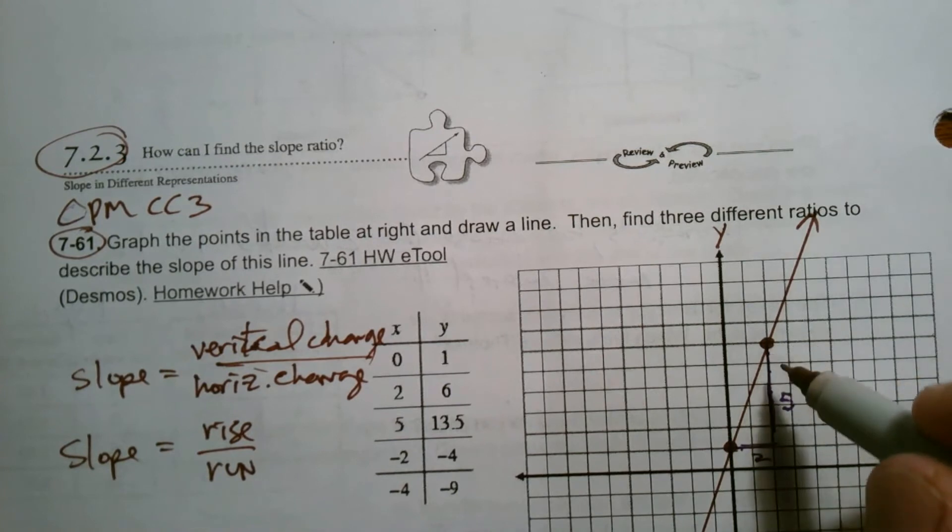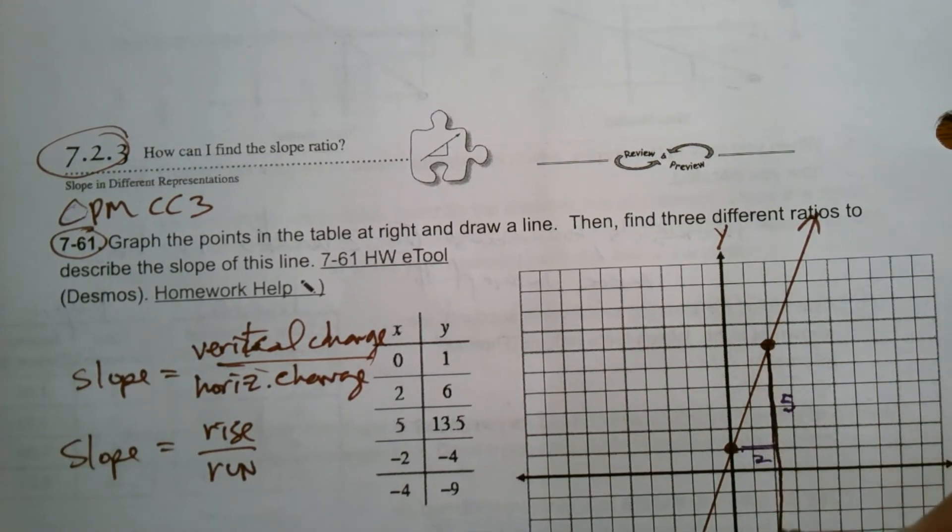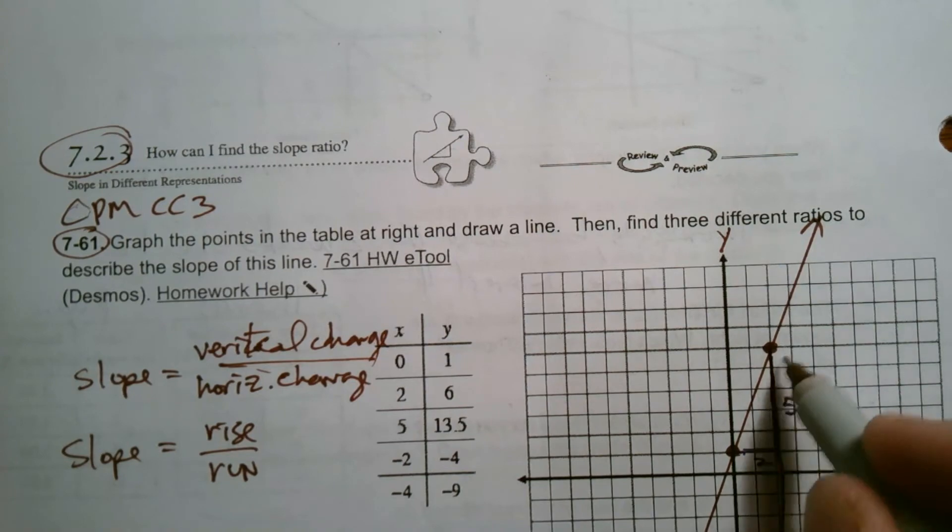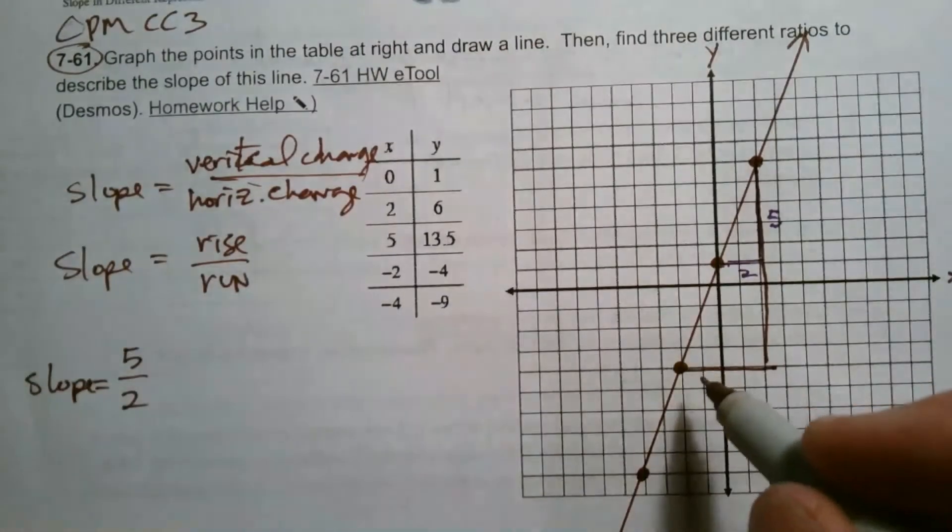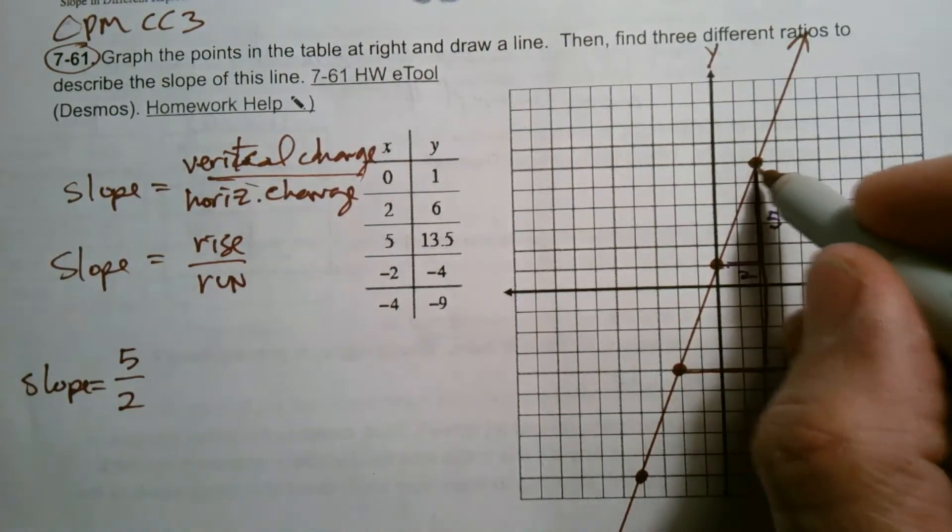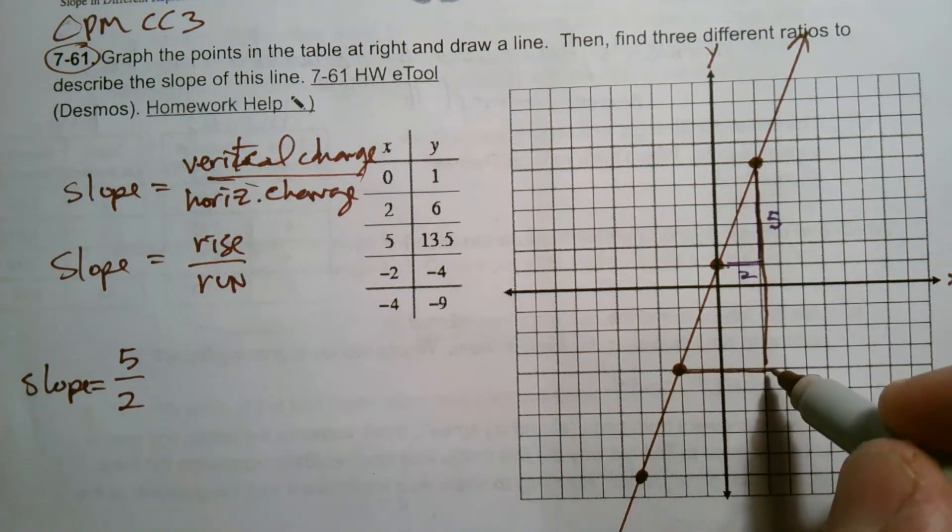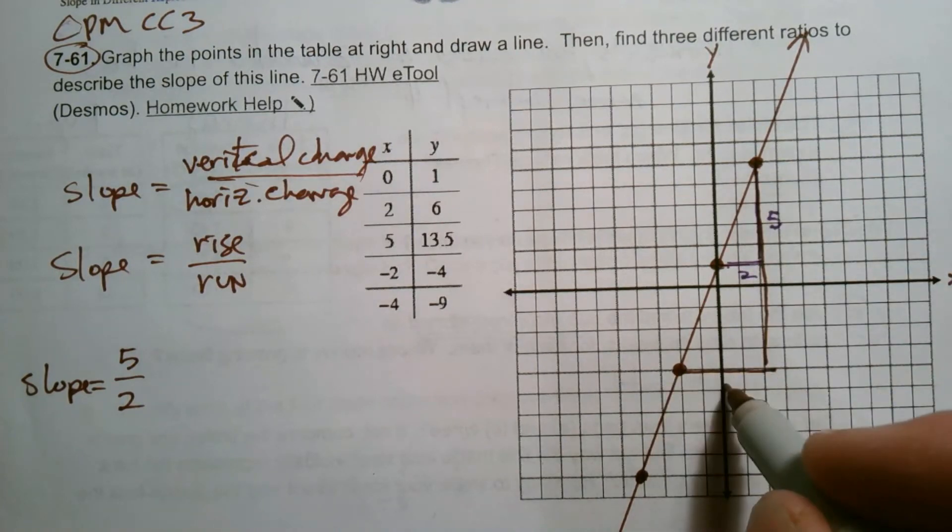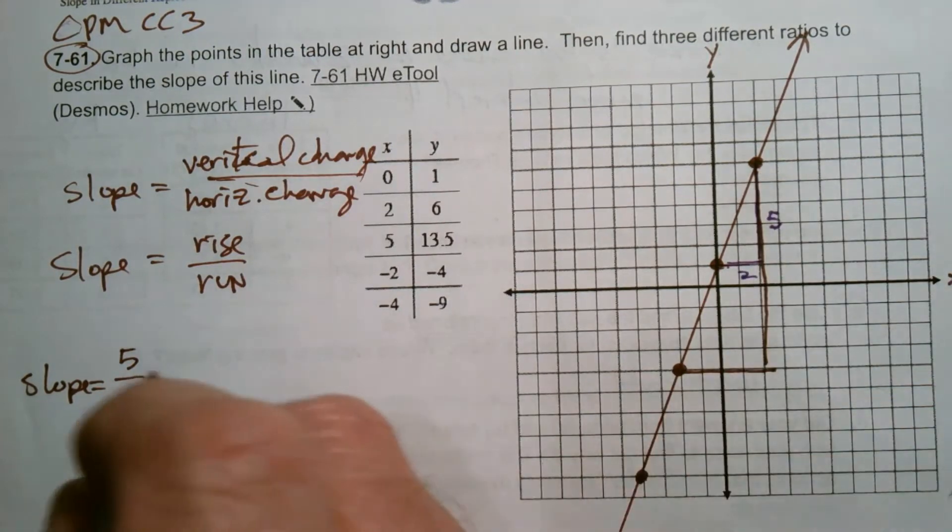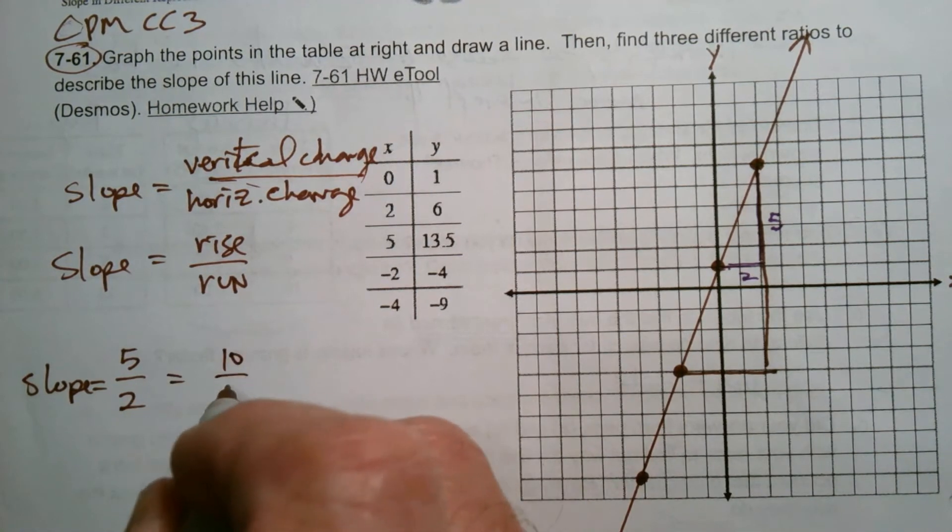But could I get another one? Sure. I could extend this triangle, make it a larger triangle from this point to this point. If I did that, then from there to there would be 10, from here to here is four. So I could actually describe this as also 10 over four.